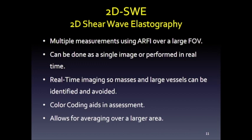2D shear wave systems can produce either a single image per acquisition or, from several vendors, real-time imaging with a slow refreshing frame rate of repeat measurements. This is a real-time technique, so we can avoid masses and large vessels to find the best location. All 2D systems use color-coded maps giving a general overview of the area and allowing averaging over a much larger region.